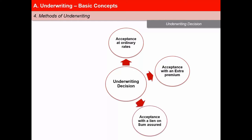Third, acceptance with a lien on the sum assured. A lien is a kind of hold which the life insurance company can exercise in part or whole on the amount of benefit to be paid in the event of a claim. For example, if the life assured dies from a specified cause — such as relapse of TB within a given period — only a decreased amount of death benefit would be payable. Fourth, acceptance with a restrictive clause, where a restrictive clause limits death benefit in the event of death under certain circumstances.